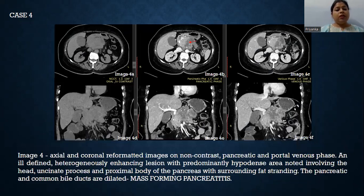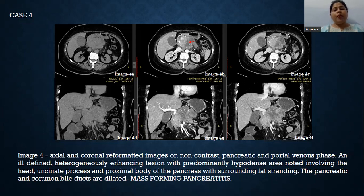This is an axial and coronal reformatted image on non-contrast, pancreatic, and portal venous phase. In this case, an ill-defined, heterogeneously enhancing lesion with a predominantly hypodense area is noted involving the head, uncinate process, and proximal body of the pancreas with surrounding fat stranding. The pancreatic duct and the common bile duct are dilated, suggestive of mass-forming pancreatitis.